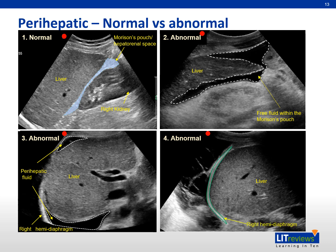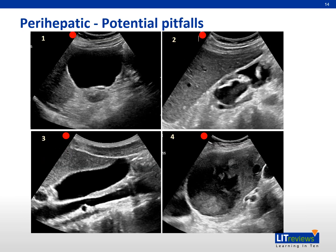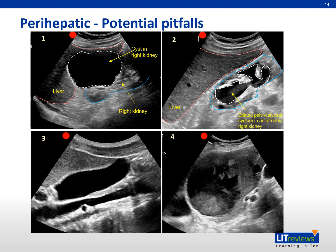There is right pleural effusion located superior to the right hemidiaphragm in image 4. Be careful of potential pitfalls: once a fluid-containing structure is identified, it is essential to determine the source of the fluid to avoid misdiagnosis. Image 1 shows a cyst arising from the right kidney. Image 2 shows a dilated pelvicalyceal system from an atrophic right kidney. In image 3, the linear echogenic structure is the inferior vena cava, while the pear-shaped fluid-filled structure anterior to the IVC is the gallbladder. Image 4 demonstrates a complex cyst in the liver that could be mistaken for hemoperitoneum.